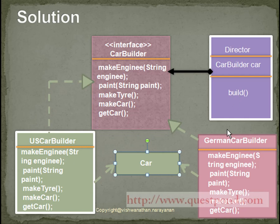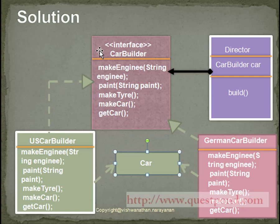The build function is responsible for invoking all the sub-component creation methods. Thus the client can directly invoke the build function and get the required object instead of calling all the methods individually present within the CarBuilder. The advantage of using the Director class is that if tomorrow we want to change some components within the car, it can be done without the client noticing, since the client only invokes the build method. Let us see how to implement the same using Java.